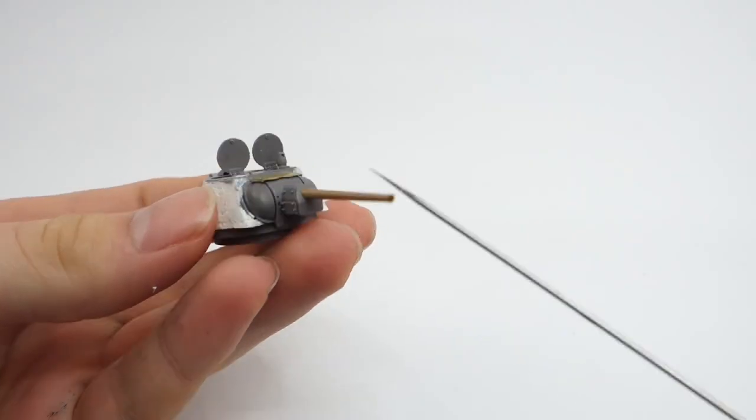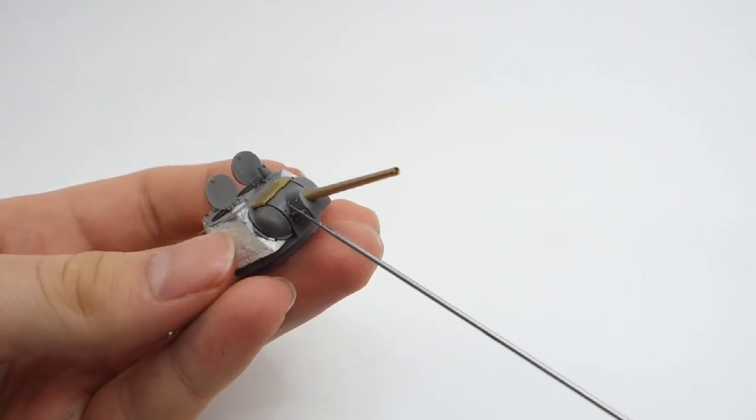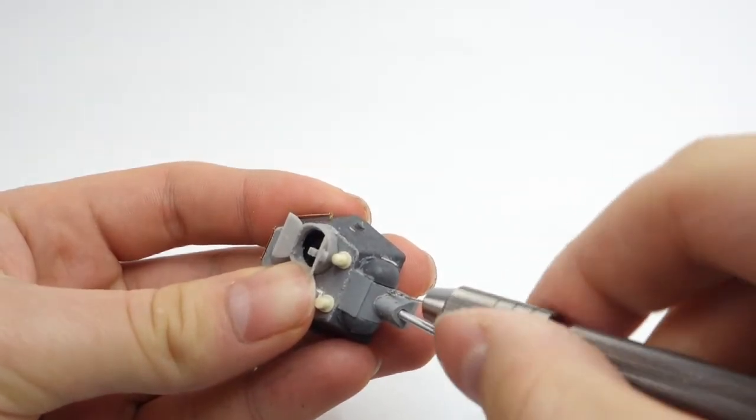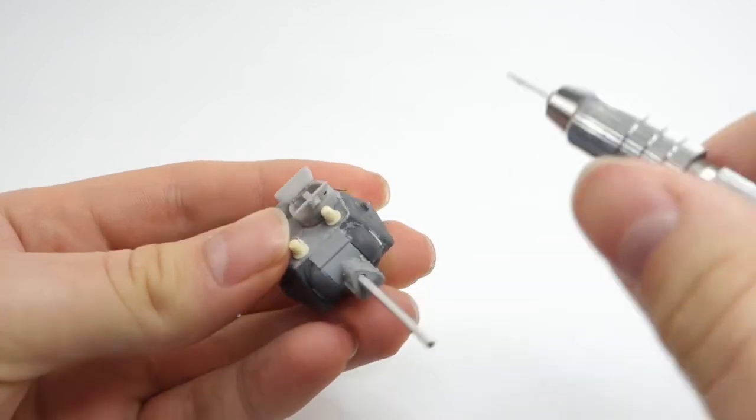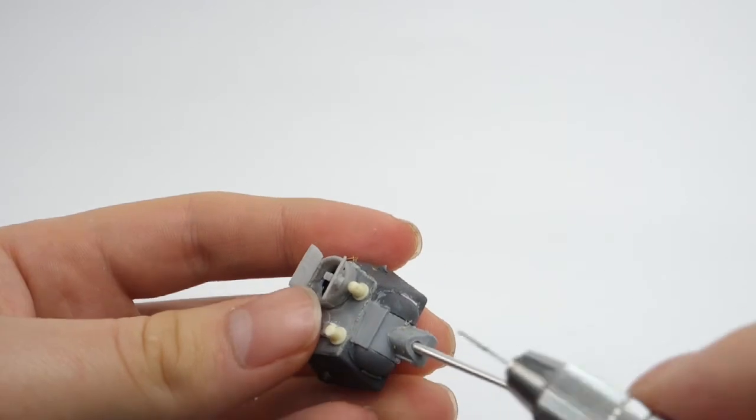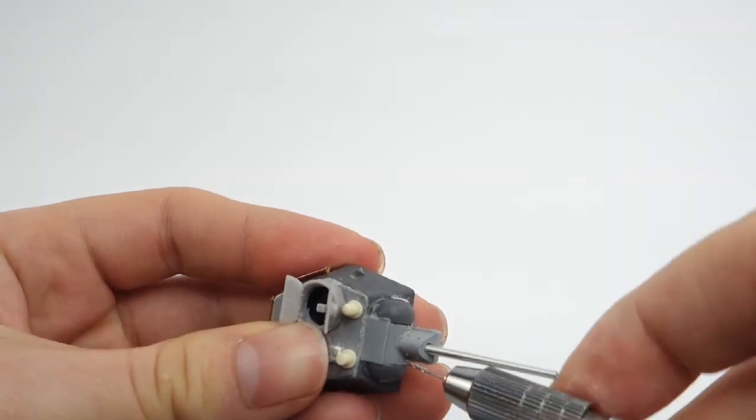While comparing my turret to a resin one from a different model, I've noticed that it lacks holes for coaxial machine gun and gun sight, so I also had to drill them out. These are the last modifications which had to be done to the turret.